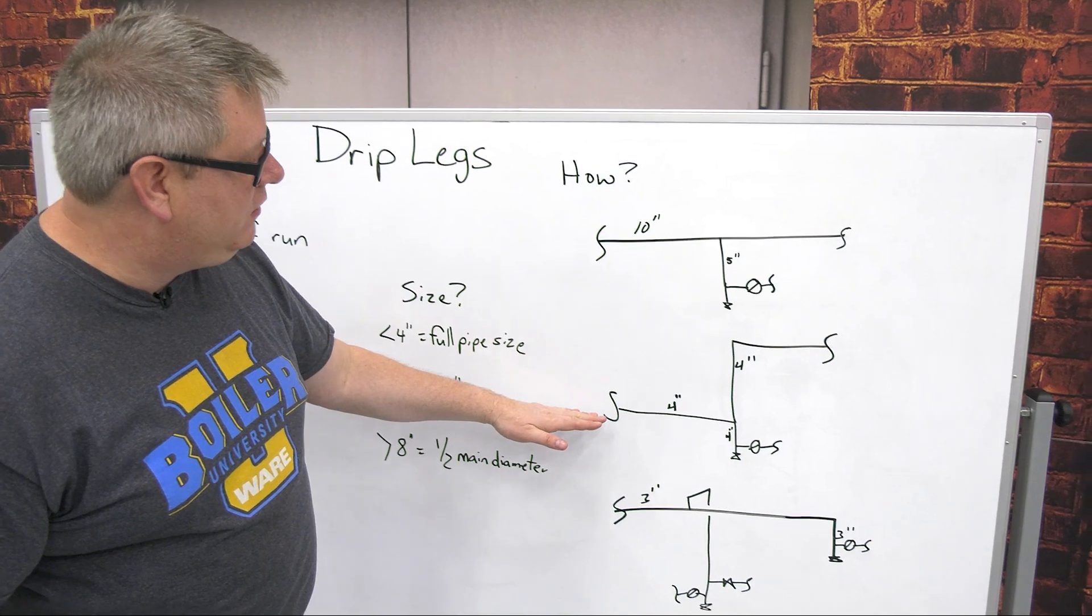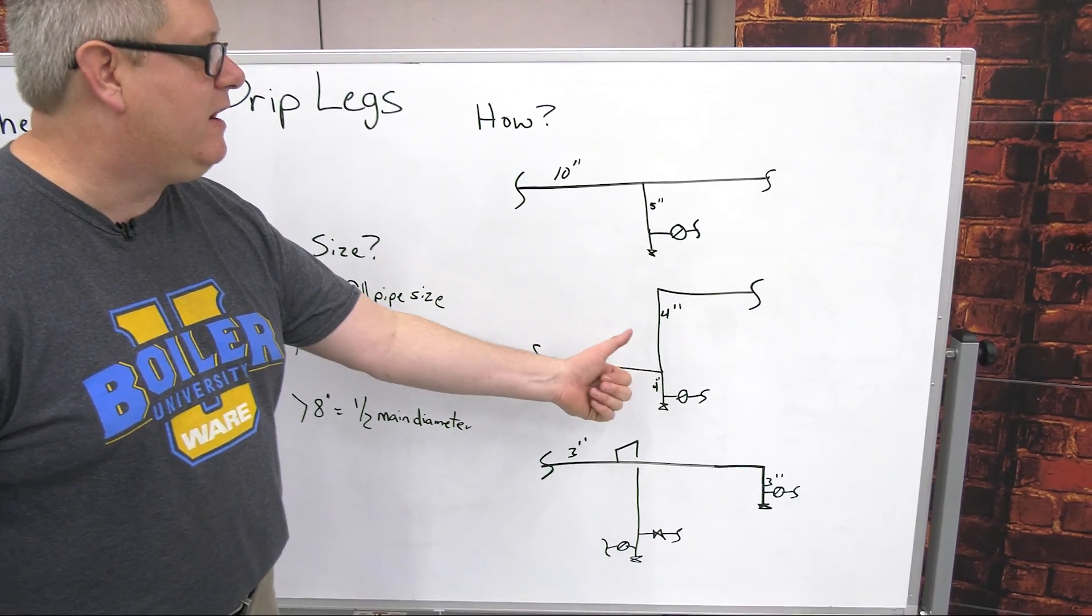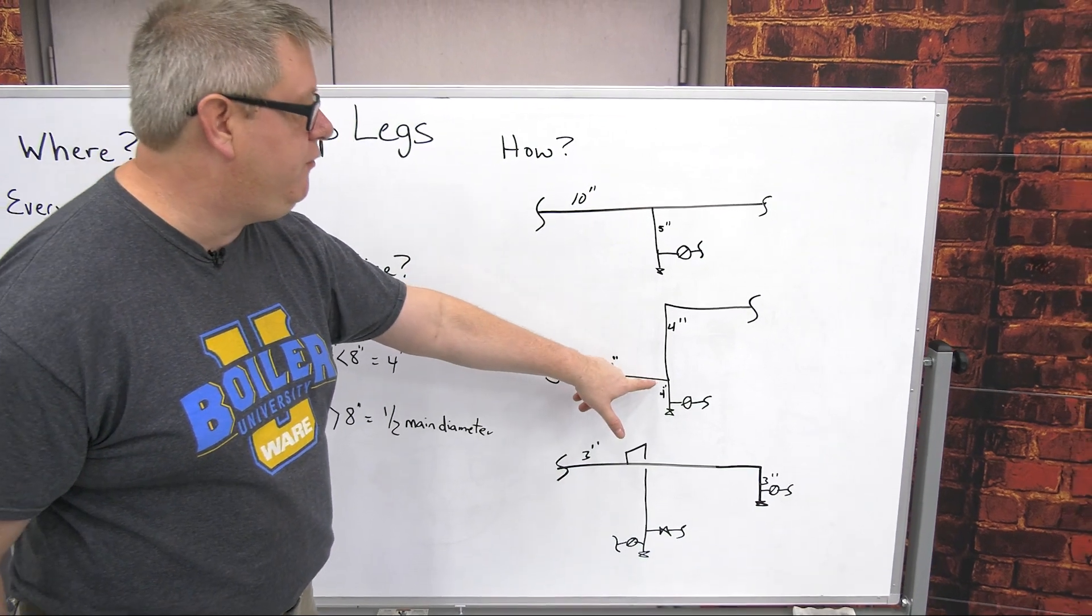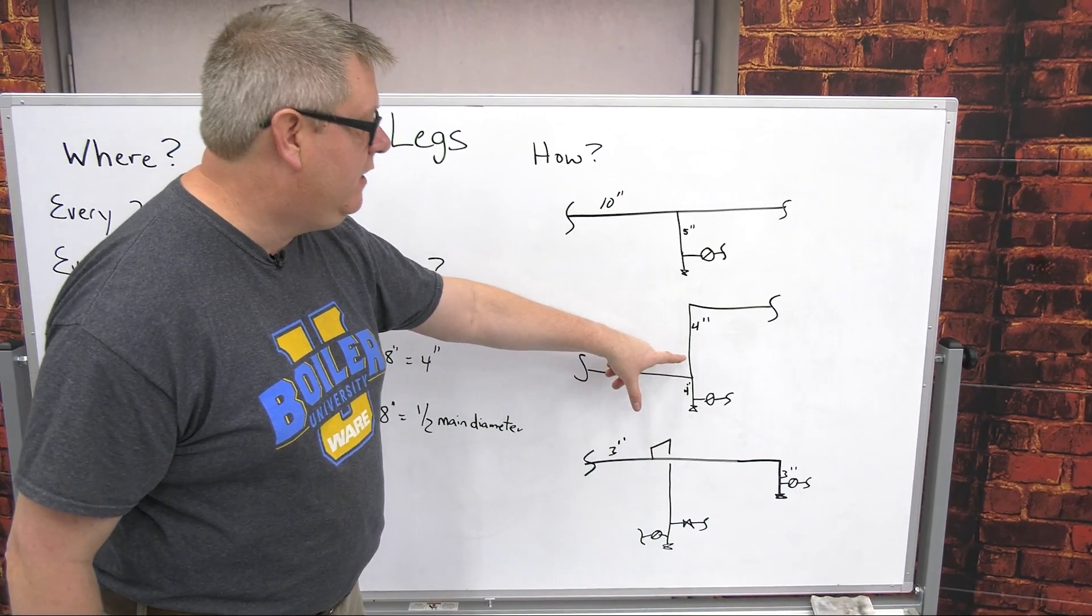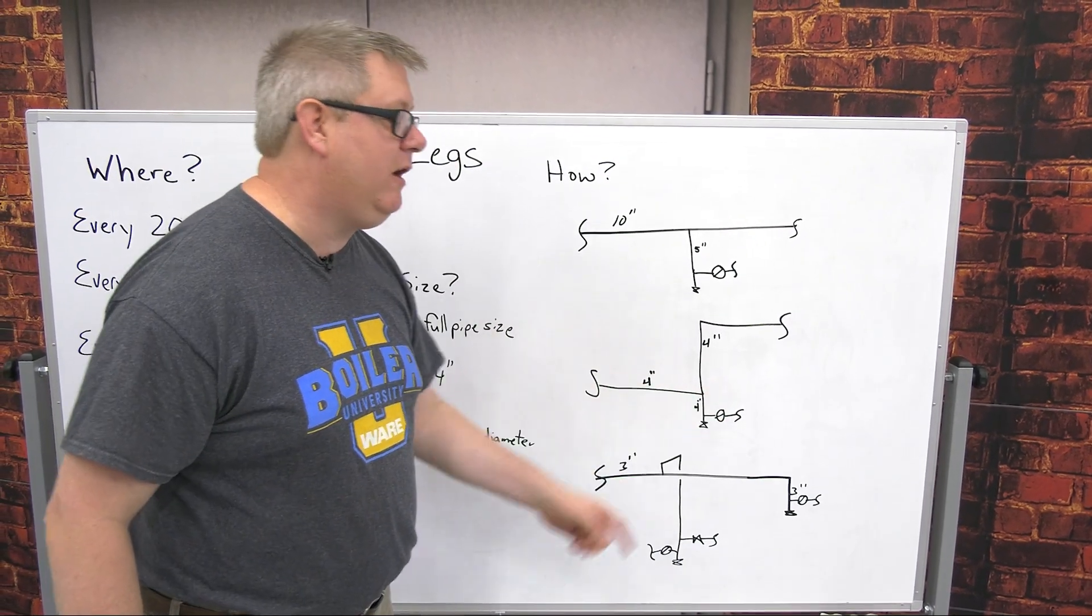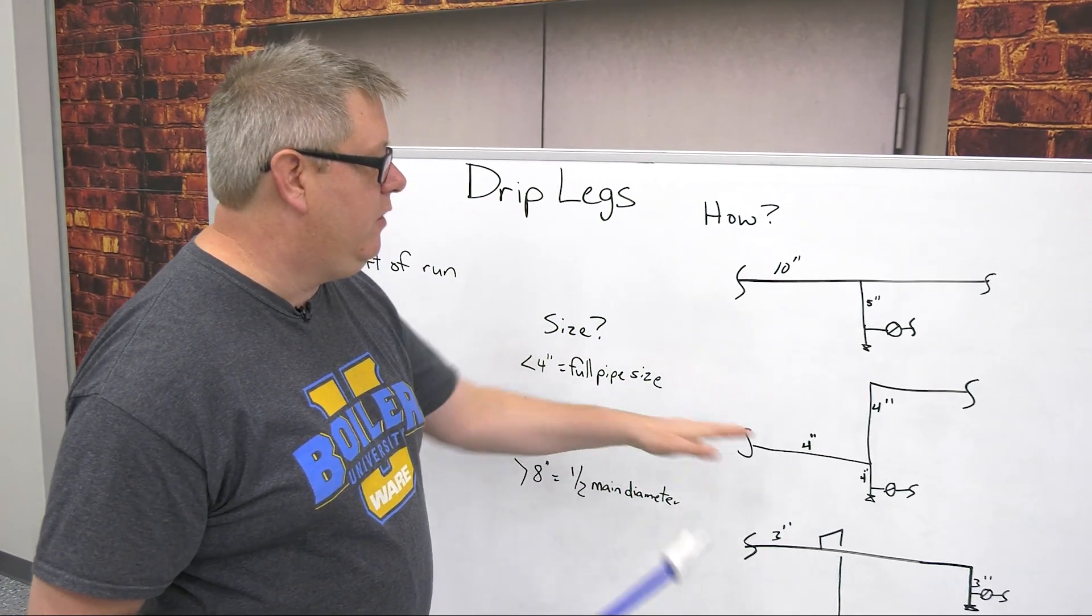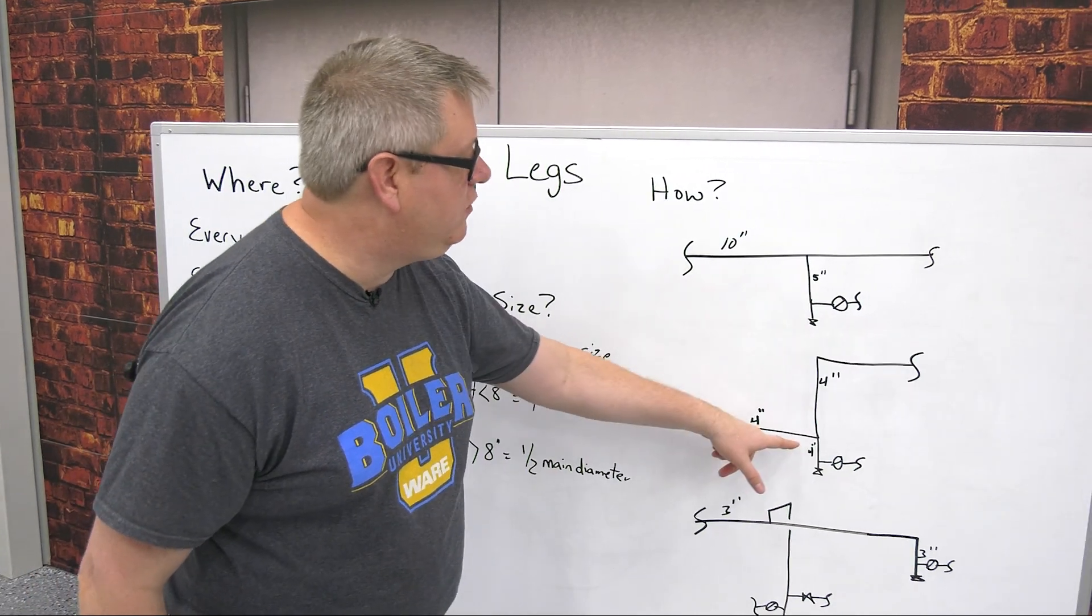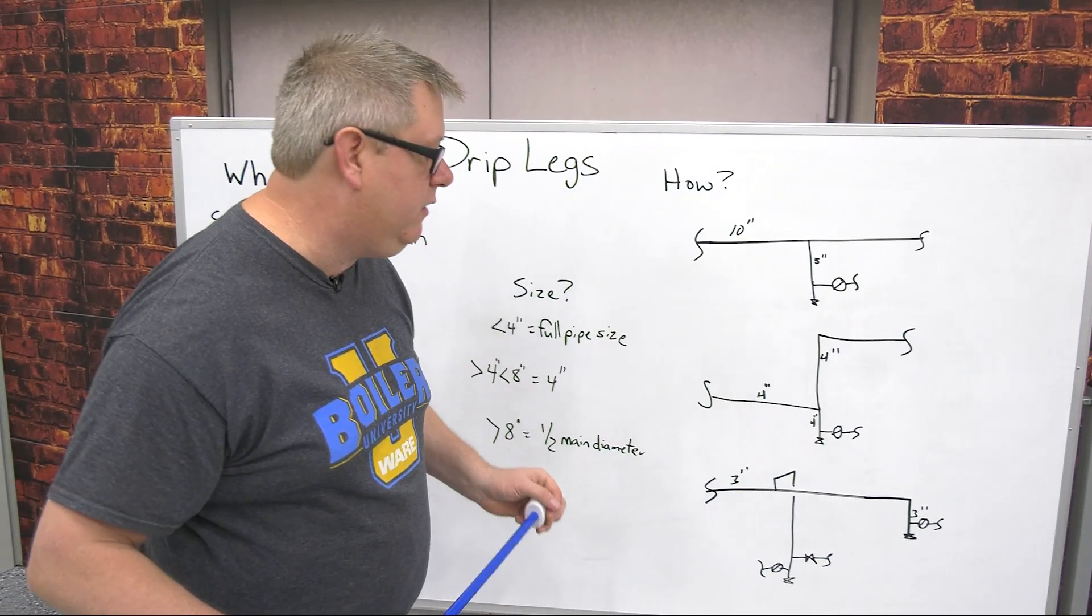If we've got an elevation, a steam line coming this way, that condensate's not going to want to go up. So we'll typically just put in a full size tee and come down, and once again out sideways to the trap with the drain line. And because this main is a four inch, it's going to continue in four inch and my drip leg is going to be four inch.